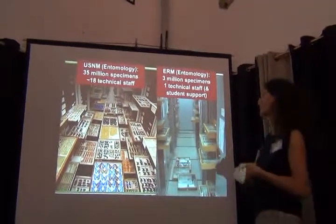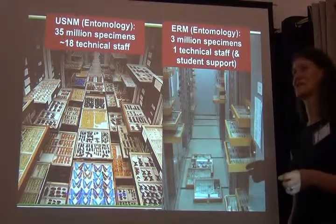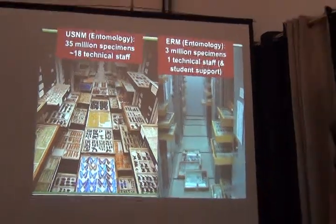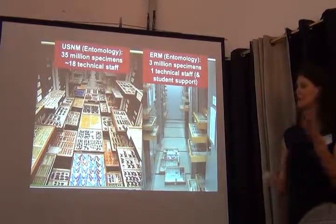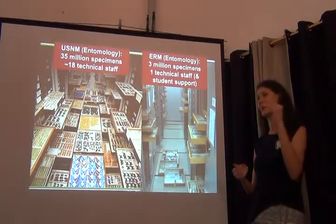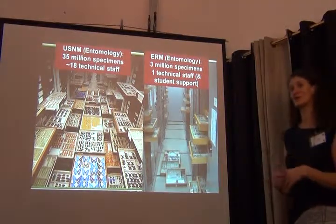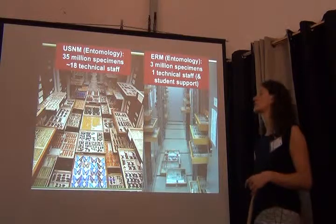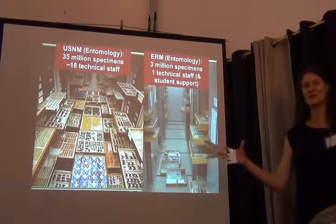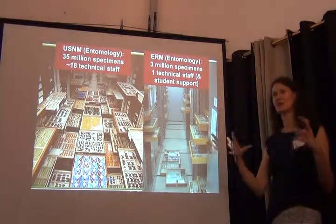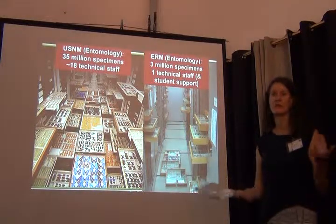A true example is the U.S. National Museum at the Smithsonian Institution: the entomology collection alone has 35 million specimens — the second largest insect collection after the Natural History Museum in London — and has roughly 12 technical staff to care for them, a number I believe has actually decreased since the web page was updated. Our Entomological Research Museum at UCR has about 3 million specimens — a fairly good-sized university collection overall — but really only one technical staff member, supported by undergraduate and graduate students.